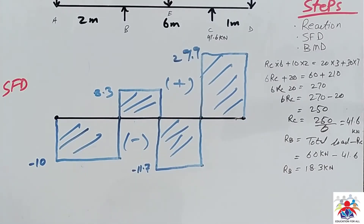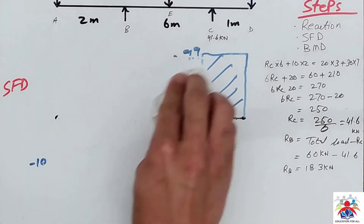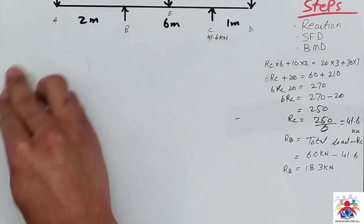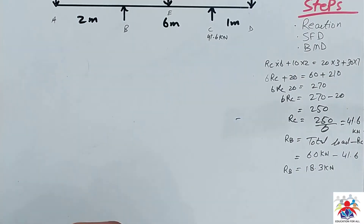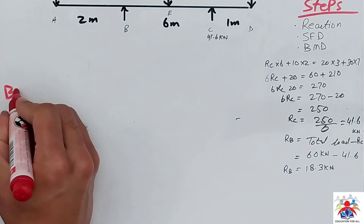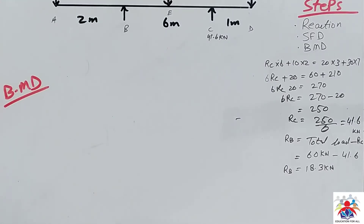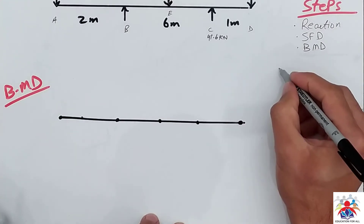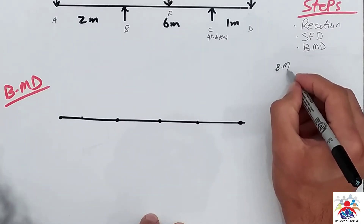Now we have to draw our bending moment diagram for this type of beam. In order to do that, we need to calculate the bending moment at each key point.